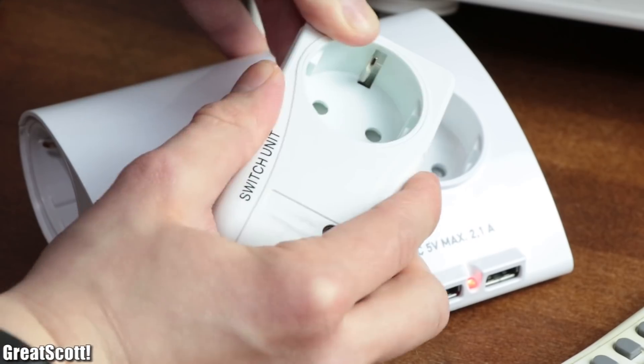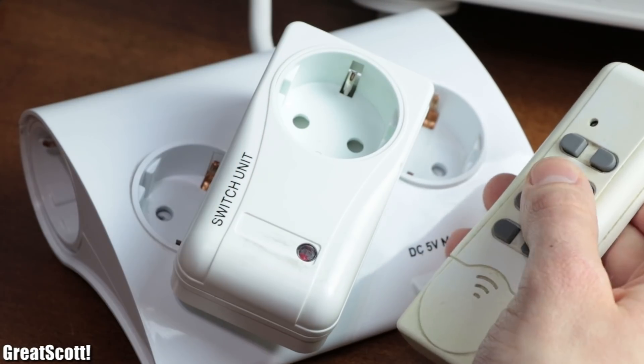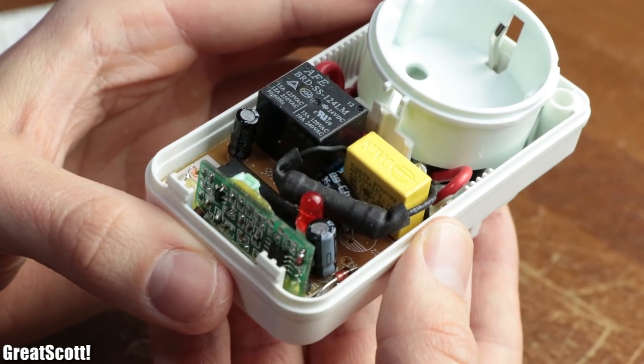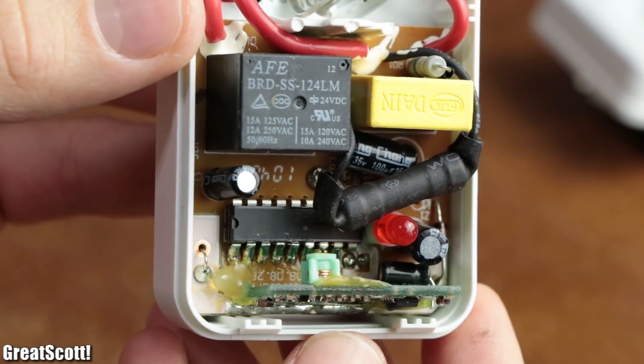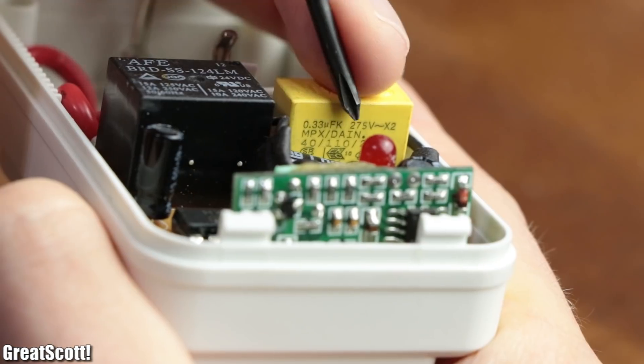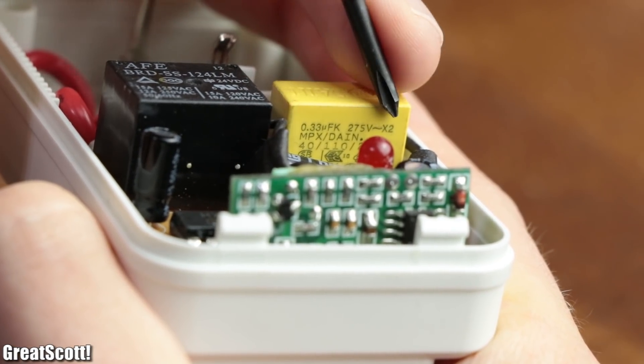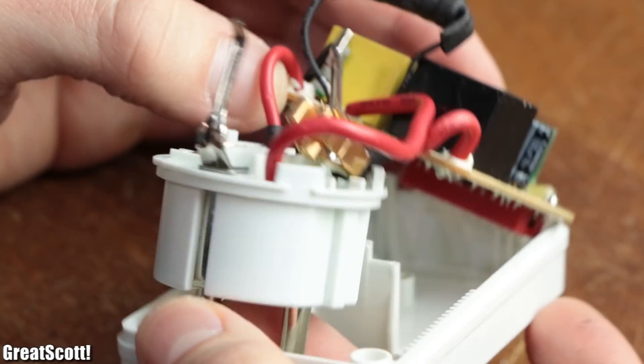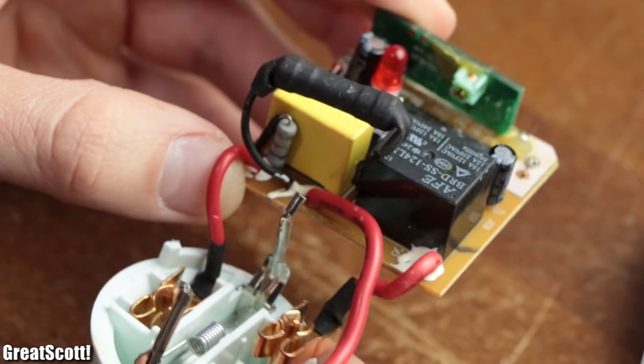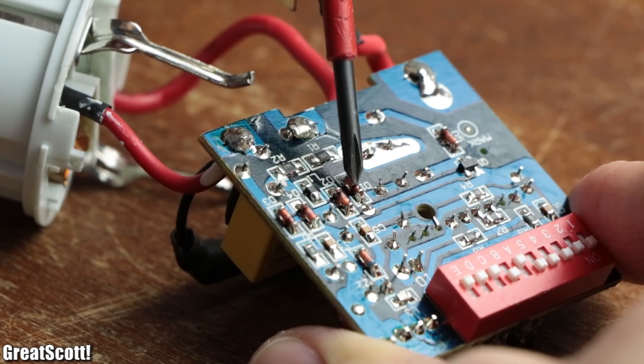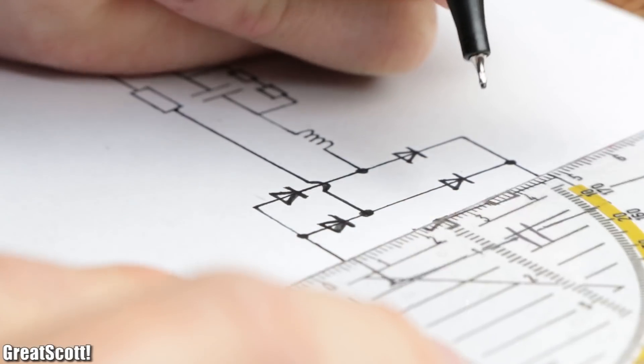So next I found this RF remote activated socket which, after opening its housing, looked pretty promising. Not only was there no visible transformer, but it also came with a big 0.33 microfarad X2 rated capacitor. That is why I removed the circuit from its enclosure and followed the mains power lines through the circuit in order to create a schematic for it.